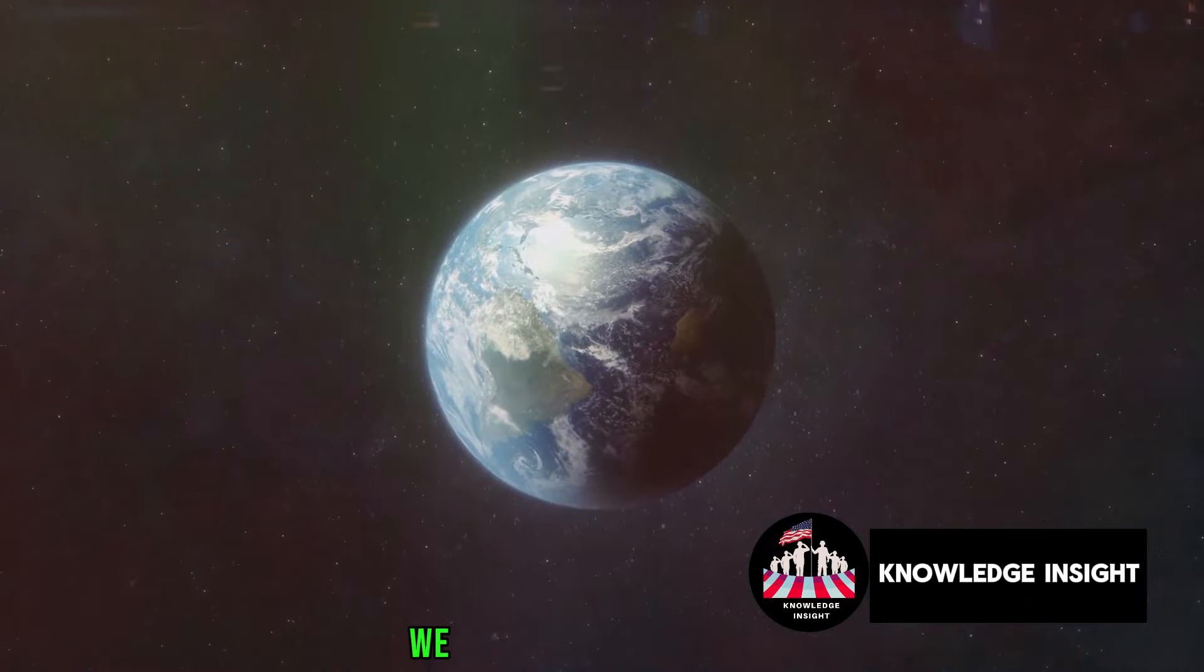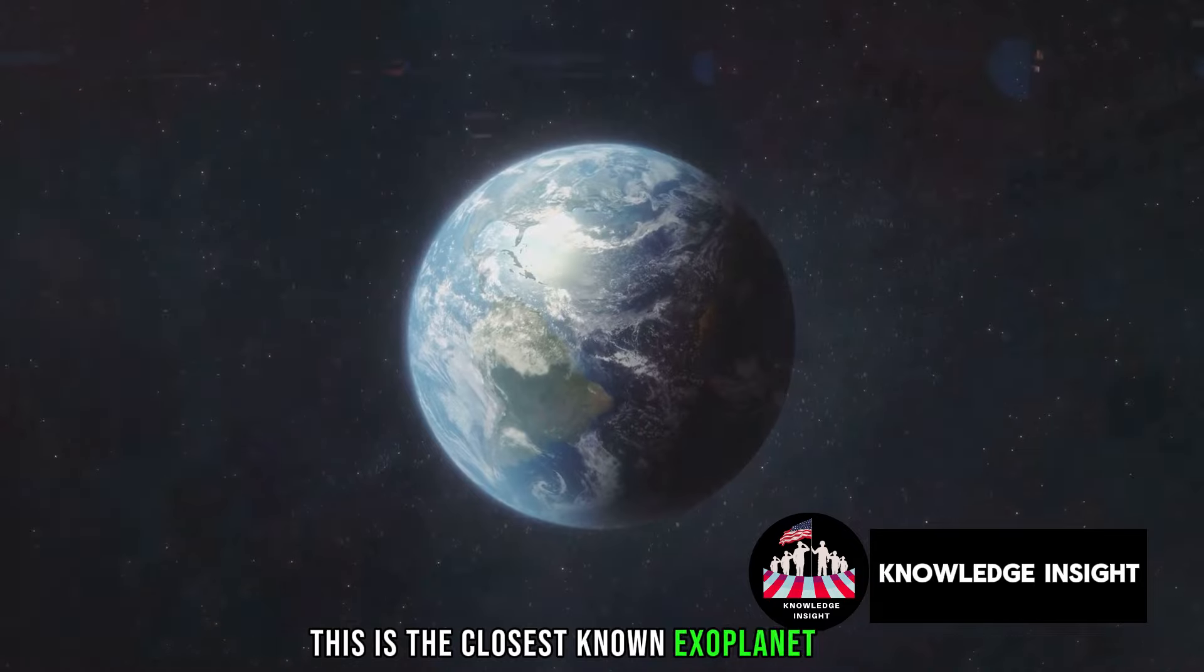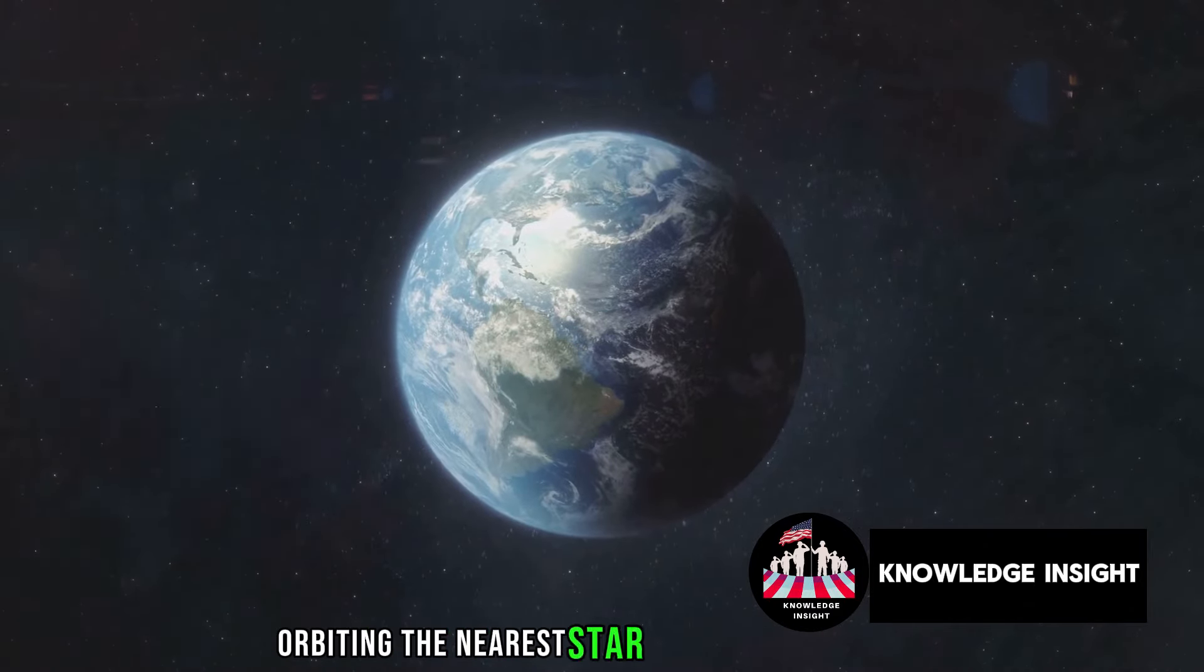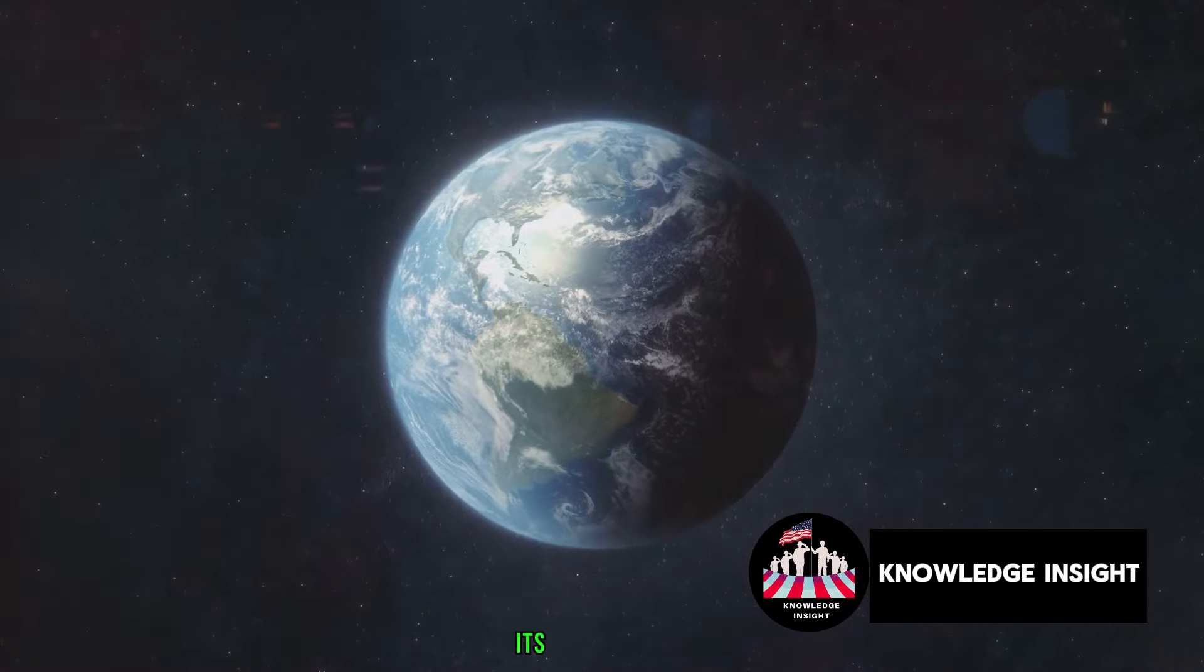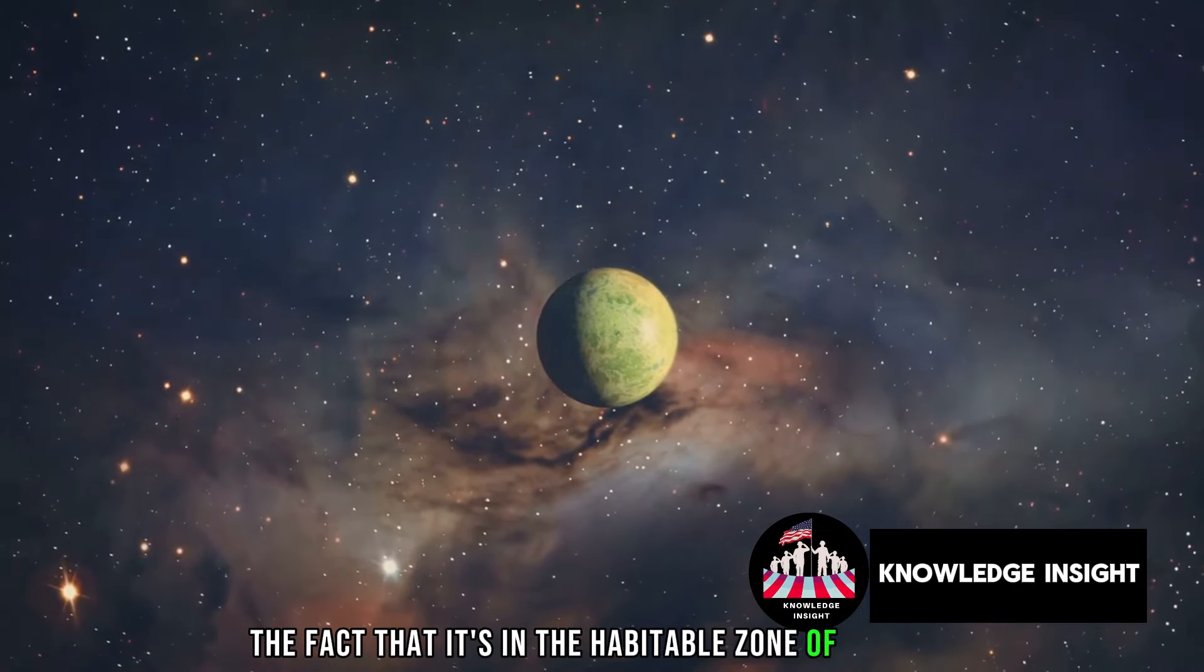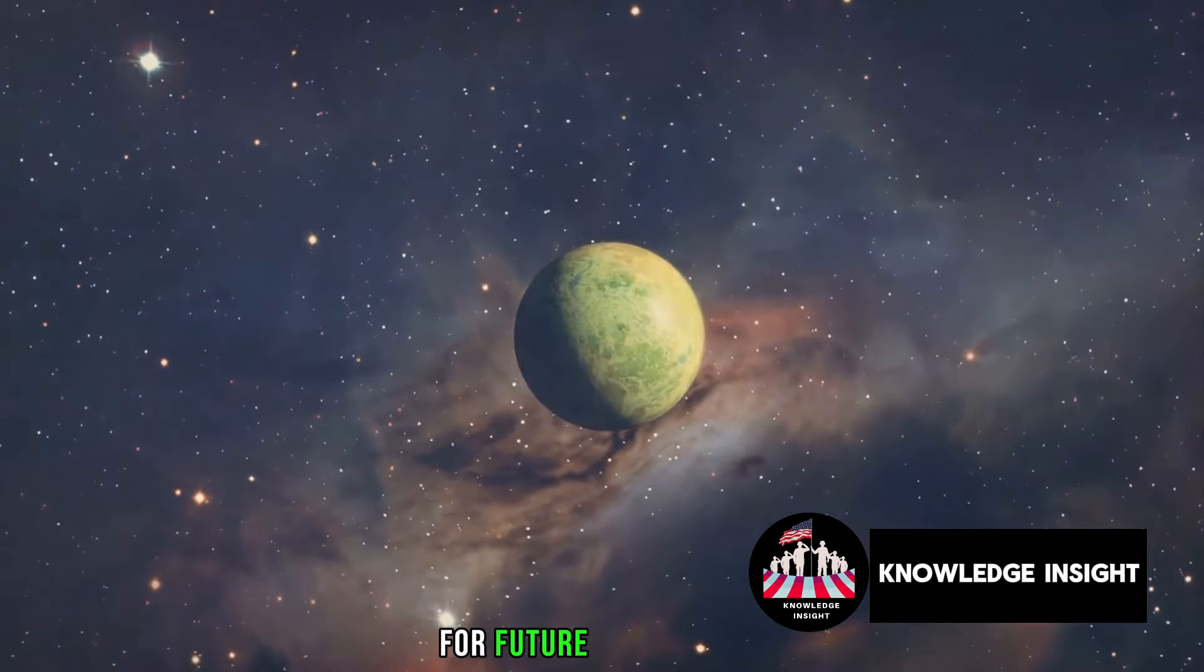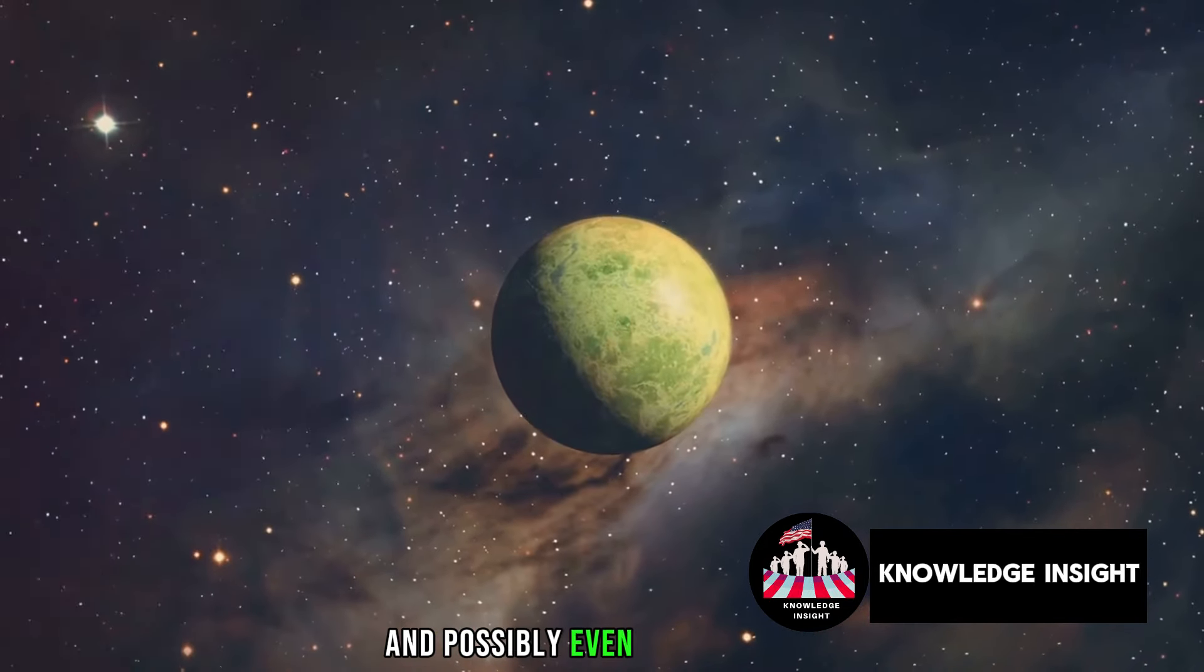Swinging in at number 2, we have Proxima Centauri b. This is the closest known exoplanet to us, orbiting the nearest star to our solar system. Its proximity, combined with the fact that it's in the habitable zone of its star, makes it one of the most exciting prospects for future exploration, and possibly even colonization.